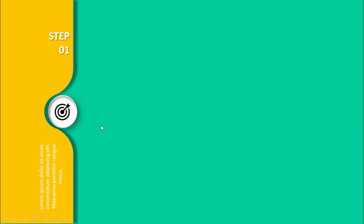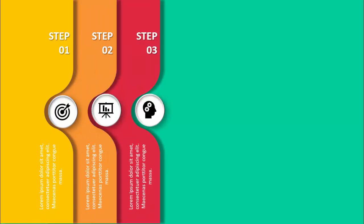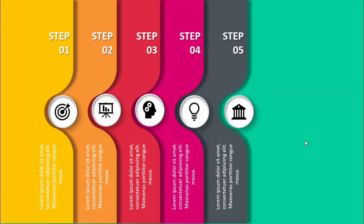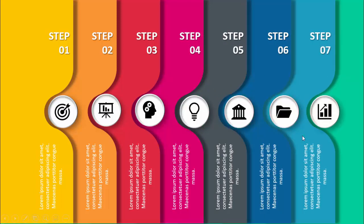In today's tutorial I am going to show you a seven-step multi-color infographic slide in PowerPoint. When I click, you can see it will show step one, with vertical text and an icon. On the next click it shows step two with a different color, then step three, step four, step five, step six, and step seven.